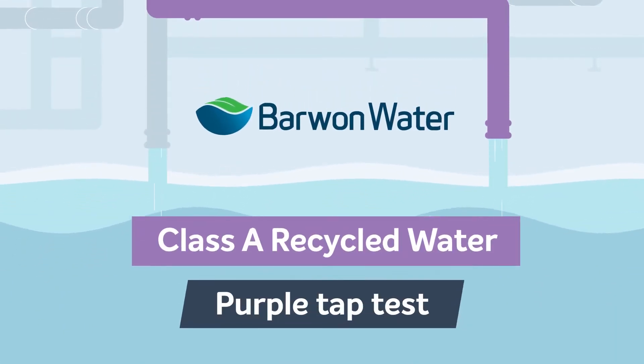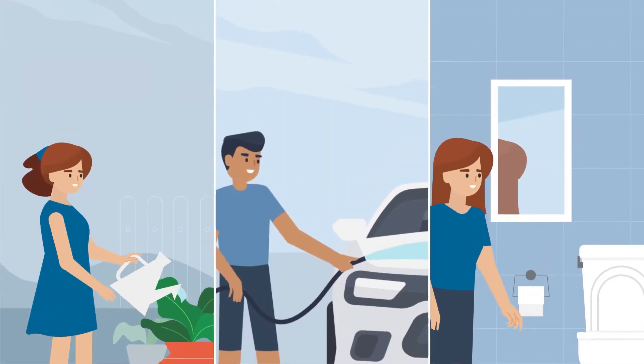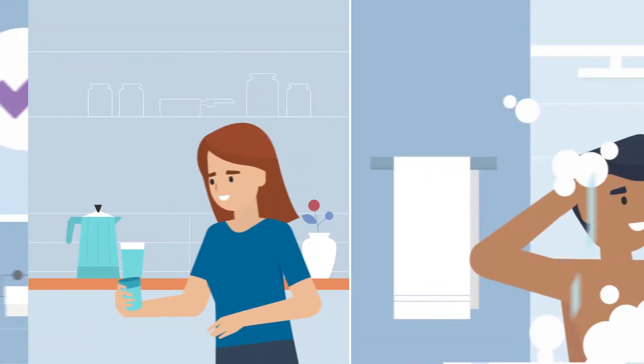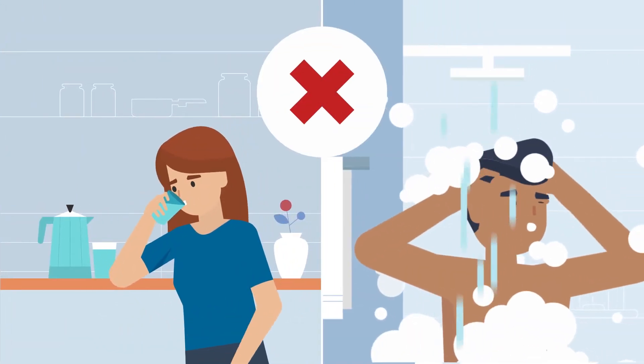Barwon Water supplies Class A recycled water for watering your garden, washing your car and flushing your toilet. But it's not for drinking or bathing in.